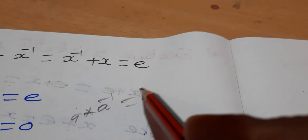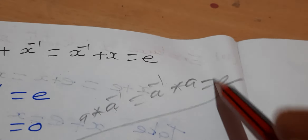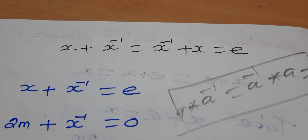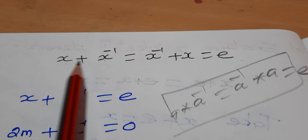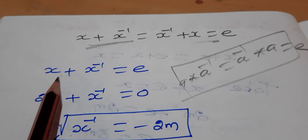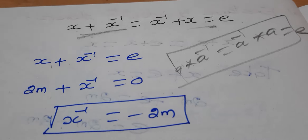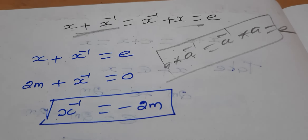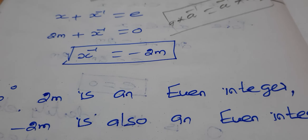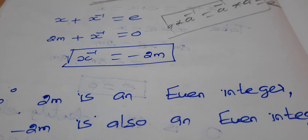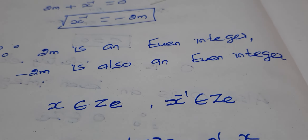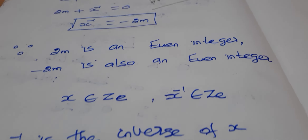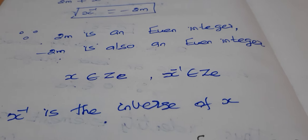For the inverse, we need a star a⁻¹ = a⁻¹ star a = e. With a = x, x plus x⁻¹ = x⁻¹ plus x = 0. If x = 2m, then x⁻¹ = -2m. Since 2m is an even integer, -2m is also an even integer. So the inverse of x is -2m, and inverse exists for every element of Z_e.